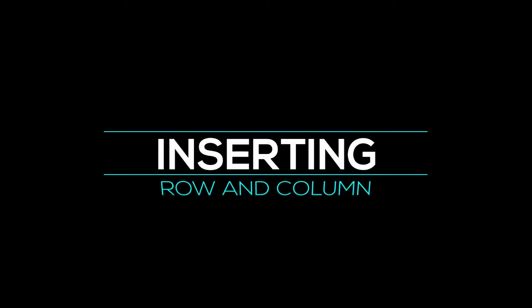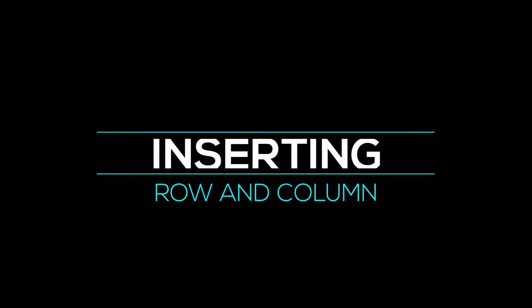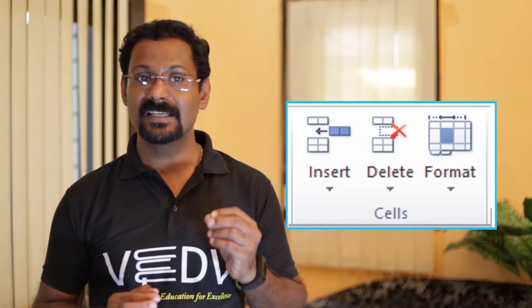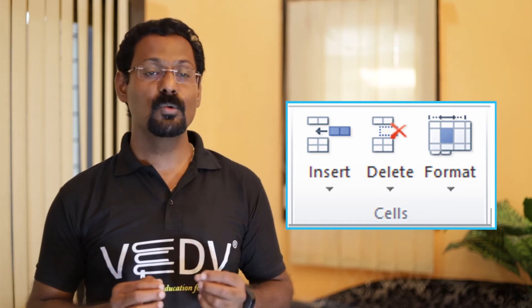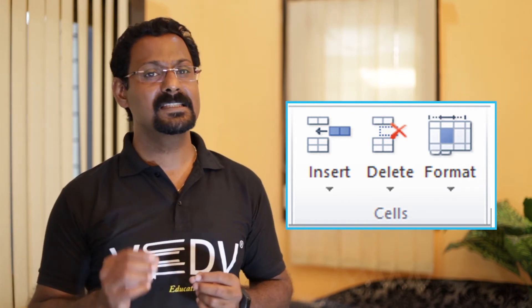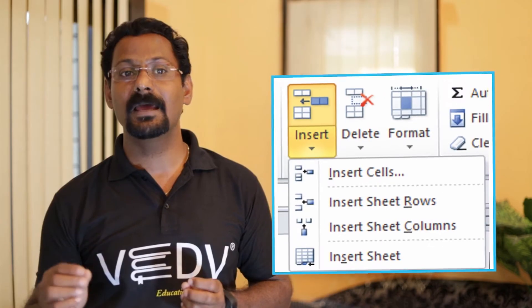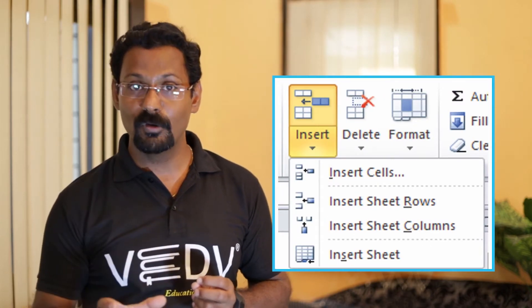Inserting rows and columns: if you need to add new data in an existing worksheet, you can insert a new cell, column, or row. Follow these steps. Number one: select a cell, row, or column where you want a new blank cell to be inserted. Number two: in the cell group on the Home tab, click on the Insert button. A drop-down menu will appear.